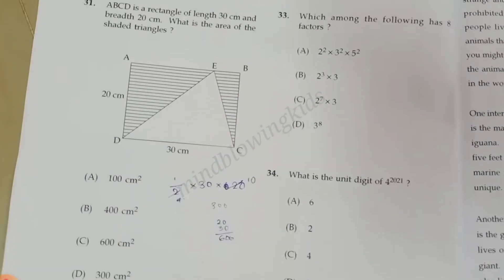Question 33: Which among the following has 8 factors? The answer is 2 raised to 3 into 3. Question 34: What is the unit digit of 4 raised to 2021? The unit digit is C, which is 4.